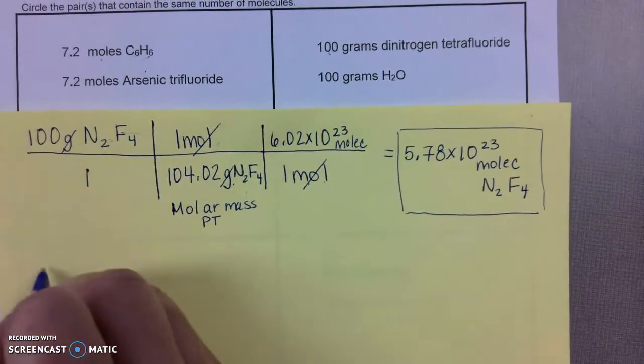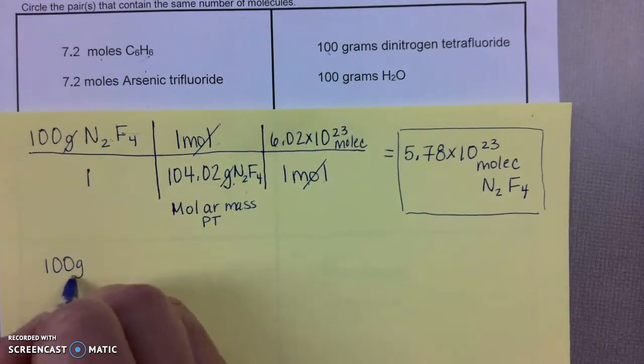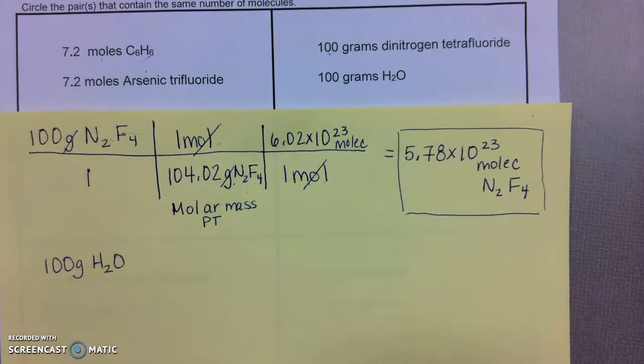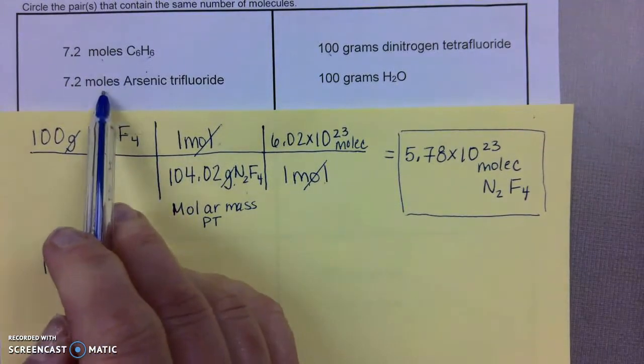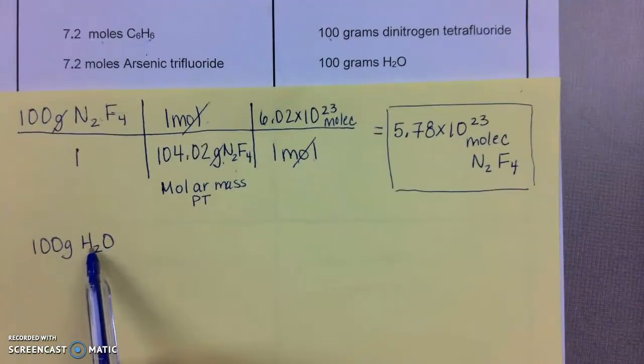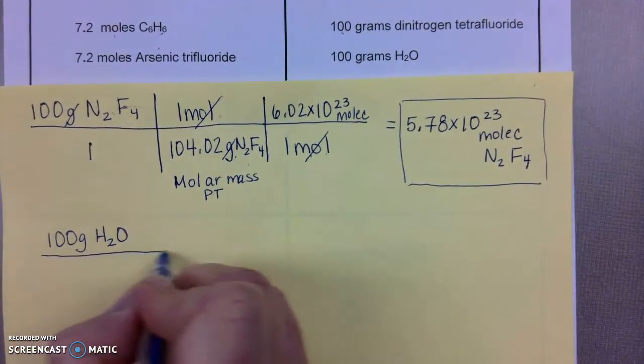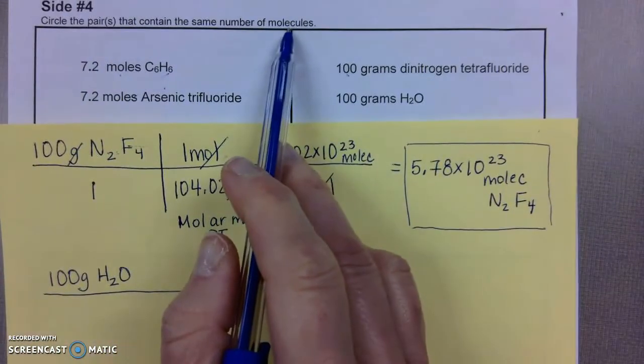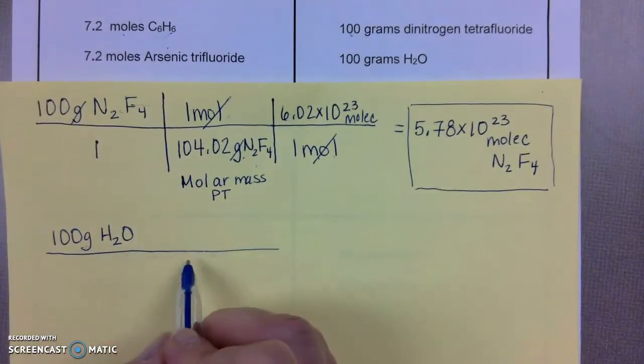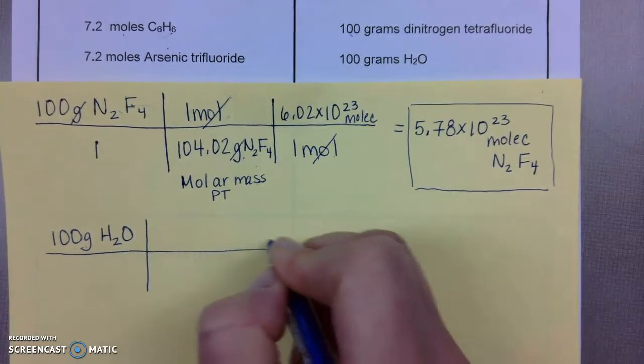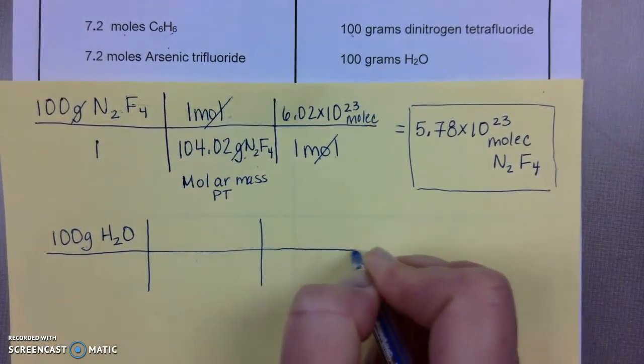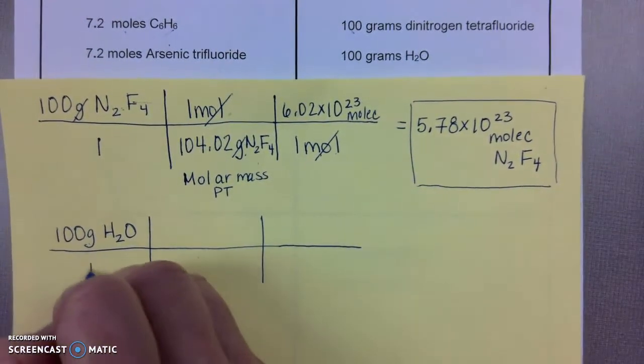We have one more to do, which is 100 grams of water. So last time we started with these two, and they were identical because we converted moles just to molecules. Now we're starting with grams. I'm going to start the setup. I'm asking you to calculate molecules. So grams to moles first, then moles to molecules next. So I'm going to make my T-chart extended so it's appropriate for that.